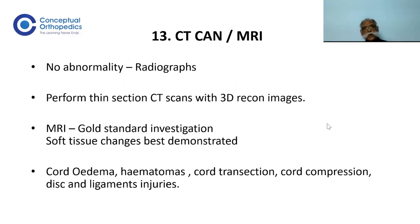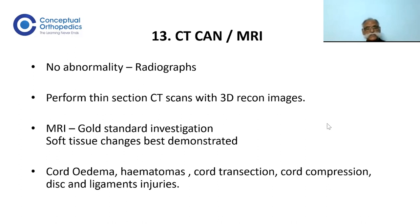If no abnormality is found on radiographs, thin CT scan sections with 3D reconstruction images are performed. MRI remains the gold standard investigation, as it best demonstrates soft tissue changes including cord edema, hematomas, transaction of the cord, cord compression, disc injury, and ligamentous and muscular injuries.